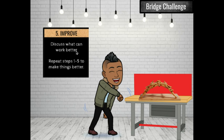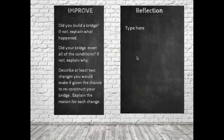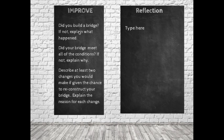Improve. Discuss what you can do better next time. Maybe you will repeat steps 1 to 5 to make things better. Here are some questions to think about — this is probably one of the most important parts of the engineering design process. You learn based on your reflection. You can type on the right-hand side for each of these questions: Did you build a bridge? Yes or not? If not, explain what happened. Did your bridge meet all the conditions? If not, explain why. What if you could change two things? What would you do to make the reconstruction challenge again? Describe at least two changes you would make if given the chance to redo the challenge, and explain the reason for each change.